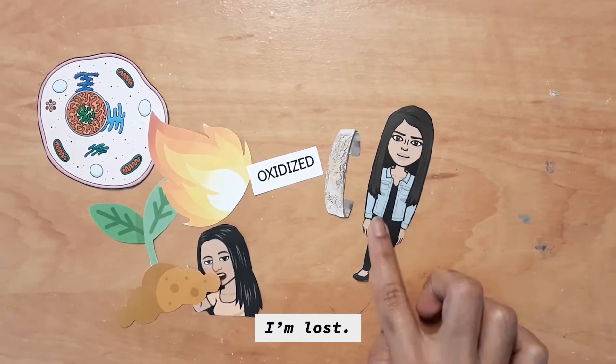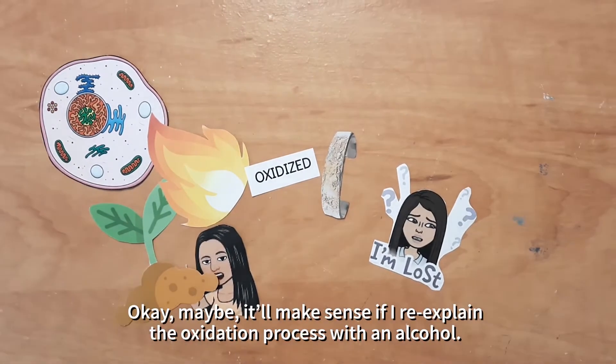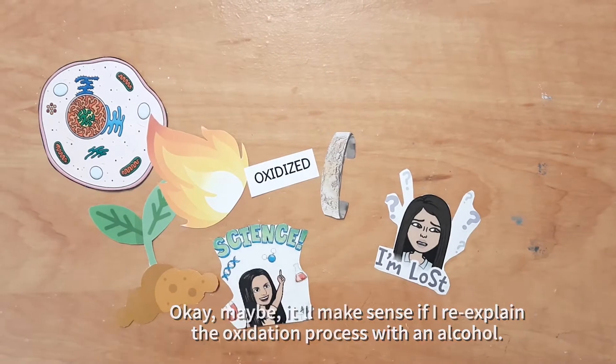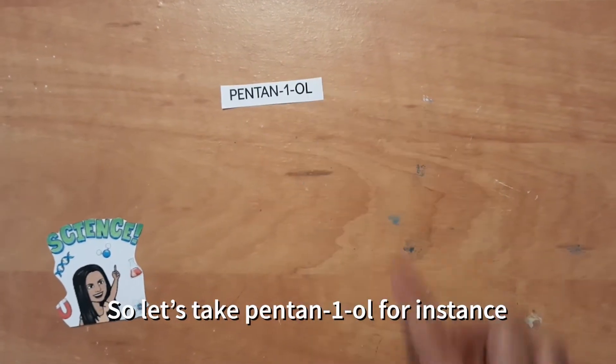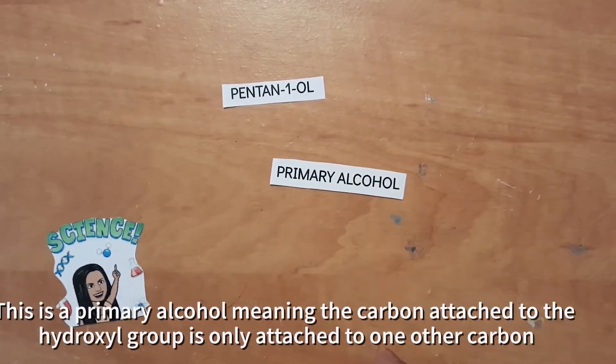I'm lost. Okay, maybe it'll make more sense if I re-explain the oxidation process with an alcohol. So let's take pentan-1-OL, for instance. This is a primary alcohol,